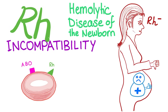Today's problem is when mommy is RH negative and she is married to an RH positive husband. The baby — like father, like son — is RH positive. That doesn't necessarily mean that if mommy is RH negative and daddy is RH positive, the baby has to be RH positive. But in this scenario: RH negative mother, RH positive baby.